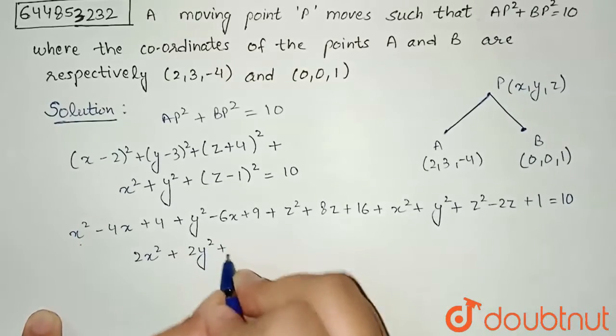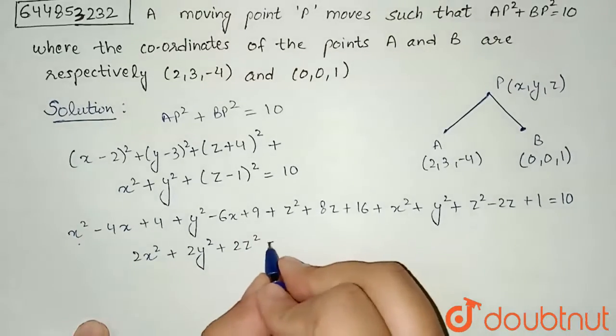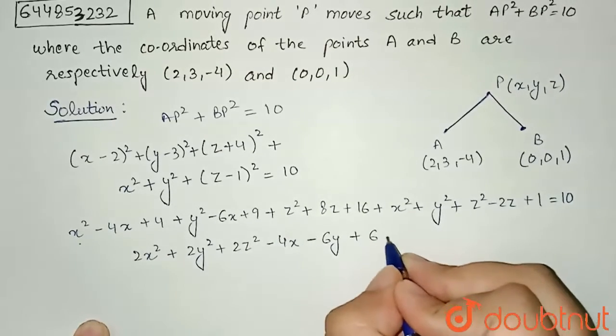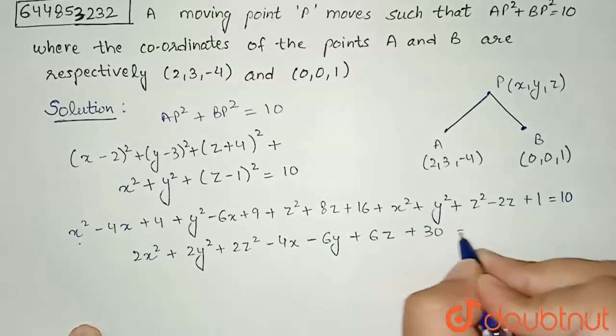For x terms I have -4x, for y I have -6y, and z is +6z, and the constant term sum up to 30 equal to 10.